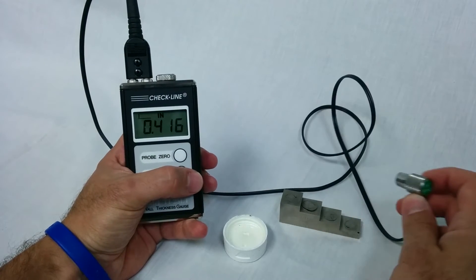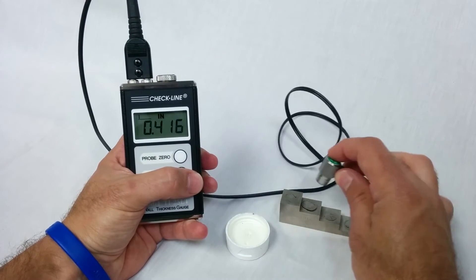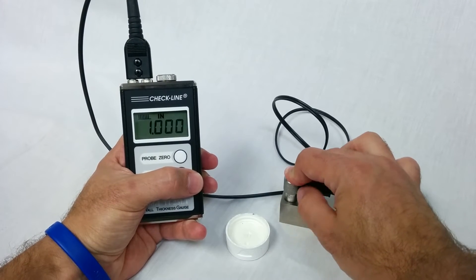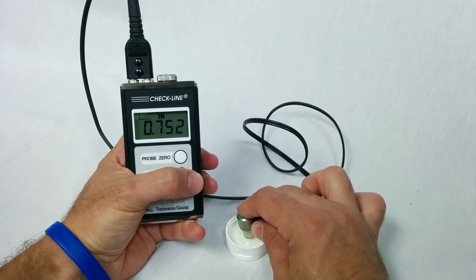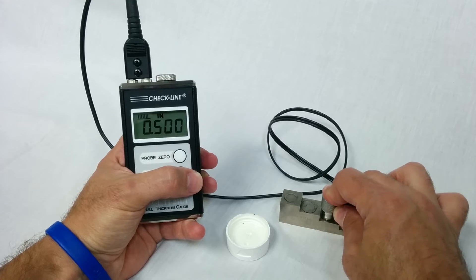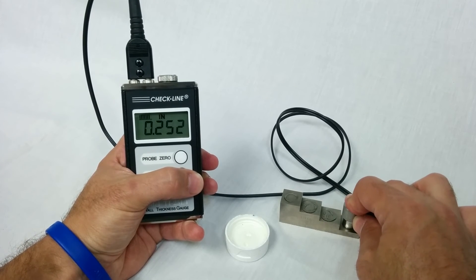Next I'll check the calibration on a four step steel test block. You have a one inch block, three quarter inch, half inch, and a quarter inch.